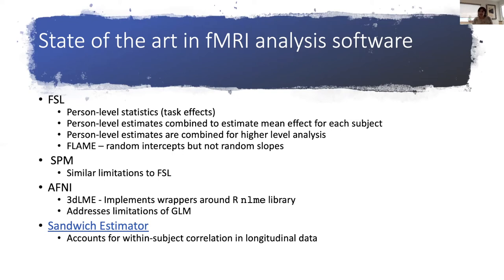In FSL, for example, the first thing that happens is you calculate person-level statistics—your traditional task effects. You create your model and look at each individual. These estimates are combined to estimate mean effects for each subject, and then these person-level estimates are passed up into a higher-level analysis. So when you do a higher-level two-timepoint or repeated-measures ANOVA-type analysis in FSL, you are not taking raw fMRI data and putting it into a giant model—you're taking these lower-level estimates from each individual. This saves computation every time a new person is added and the results are fairly convergent.